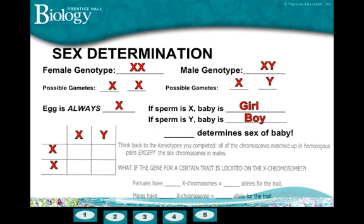Since the sperm is the variable gamete, it is the dad that determines the sex of the baby. When we look at the Punnett square, we find that there is a 50-50 chance of having a boy versus a girl. We already studied that when we did our 50-50 lab flipping coins. Now, if you think back to the karyotypes you completed, all chromosomes matched up in homologous pairs except the sex chromosomes in males.